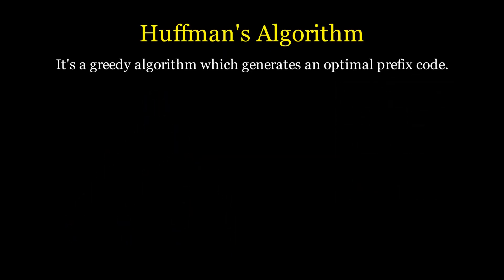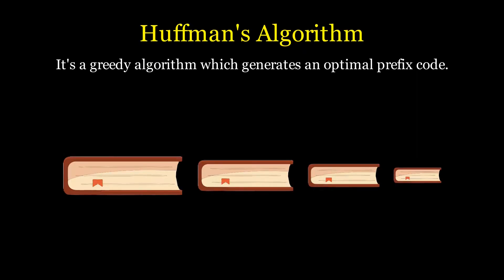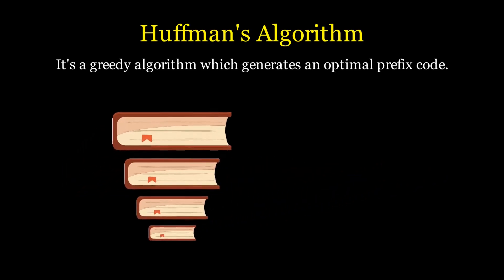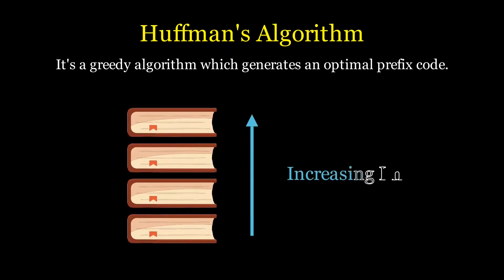Huffman is a greedy algorithm, which means it optimizes the cost at each step to get an overall optimal solution. A simple intuition: imagine a set of books where a bigger book means it's more frequently used. To minimize access time, you keep the most-used book at the top, followed by lesser-used ones. Less important ones can take longer to pick, but we prioritize the important ones first. In Huffman coding, we do the same thing — assigning more bits to less frequent characters by pushing them further from the root of the tree.